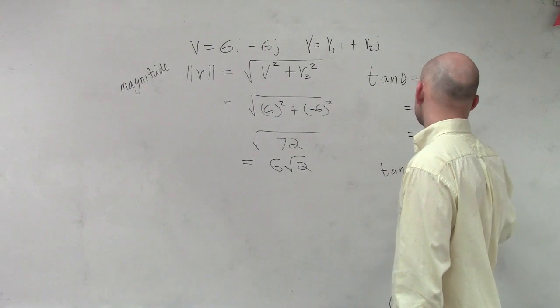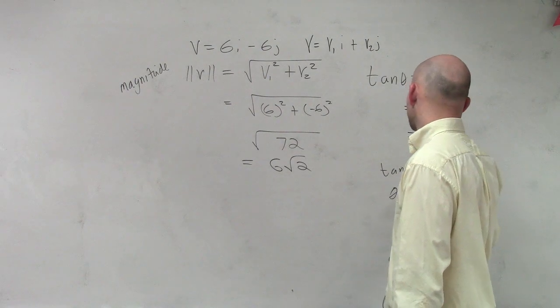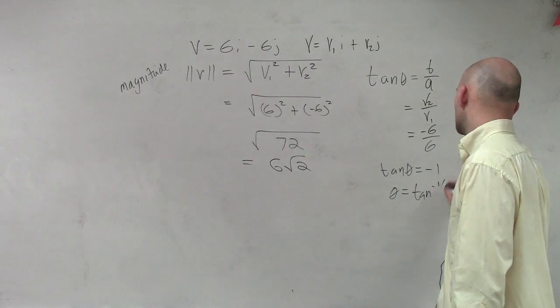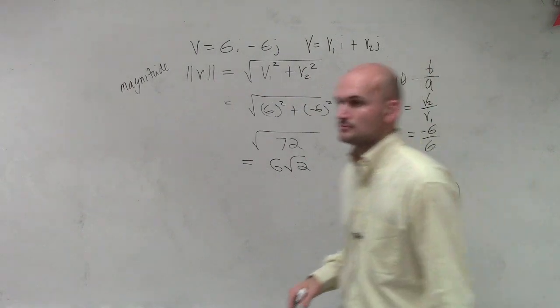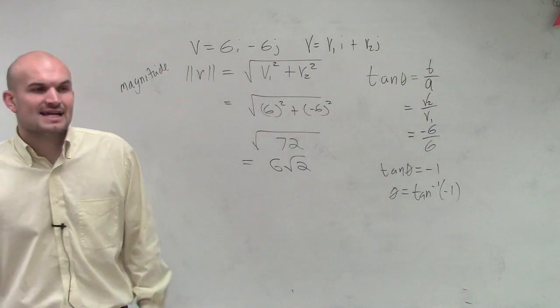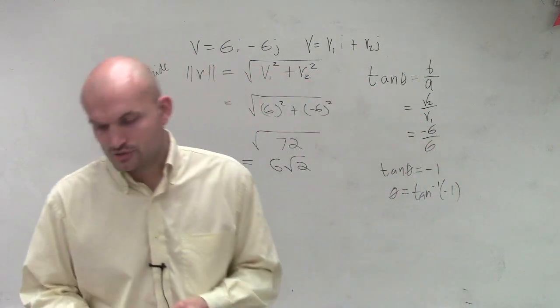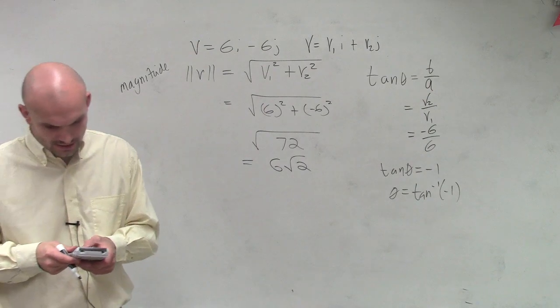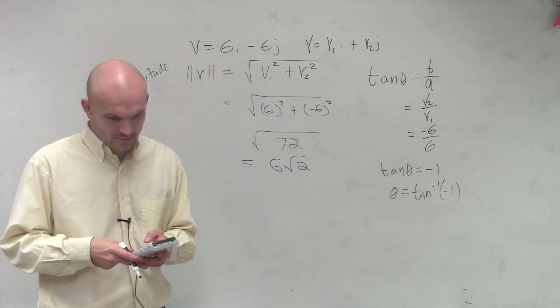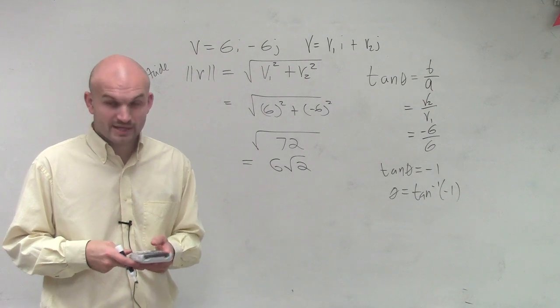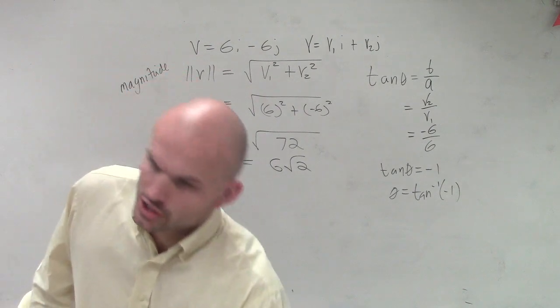So we say tan of theta equals negative 1. Therefore, theta equals tan inverse of negative 1. So now we do the inverse tangent of negative 1, and we should get negative 45 degrees. We get negative 45 degrees.